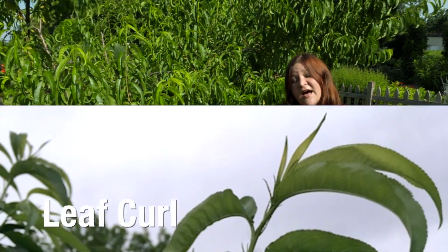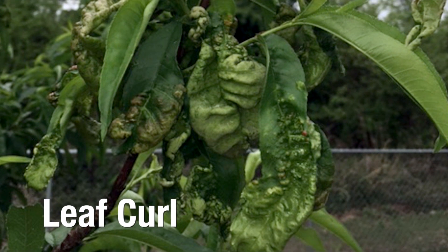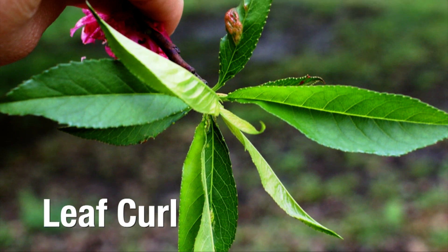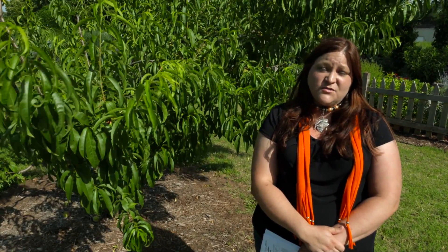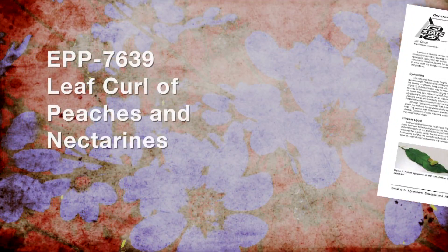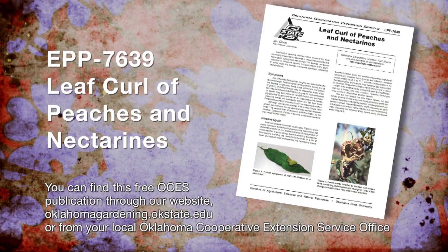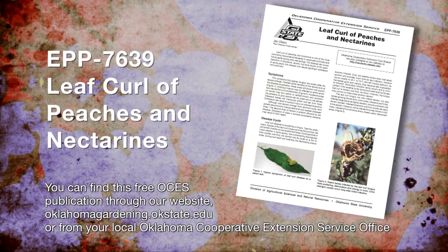The first one is called leaf curl, and it actually started back in the spring when the leaves were just coming out. This fungal disease caused those leaves to show weird distortions, sort of some puckering and blistering. If you saw this on your leaves in the spring, you might actually see the same kind of symptoms develop on the fruits later this year. We do have a fact sheet on leaf curl that covers all the management for this disease, which basically involves two fungicide applications to protect your trees.